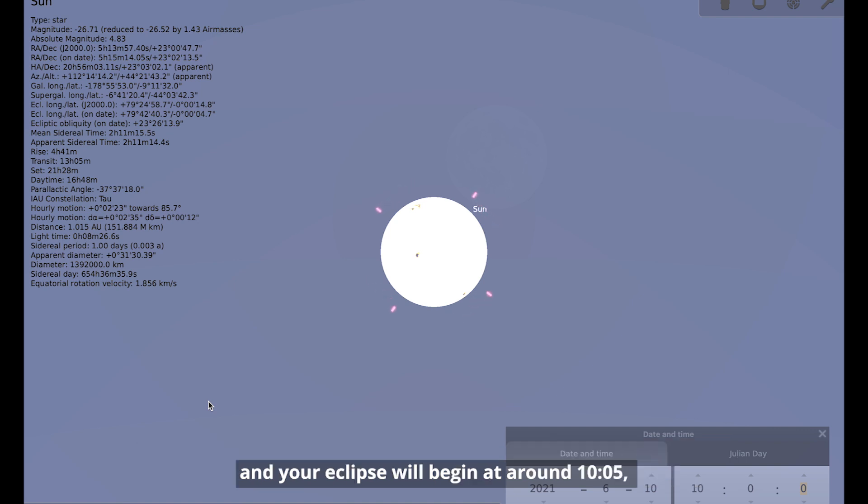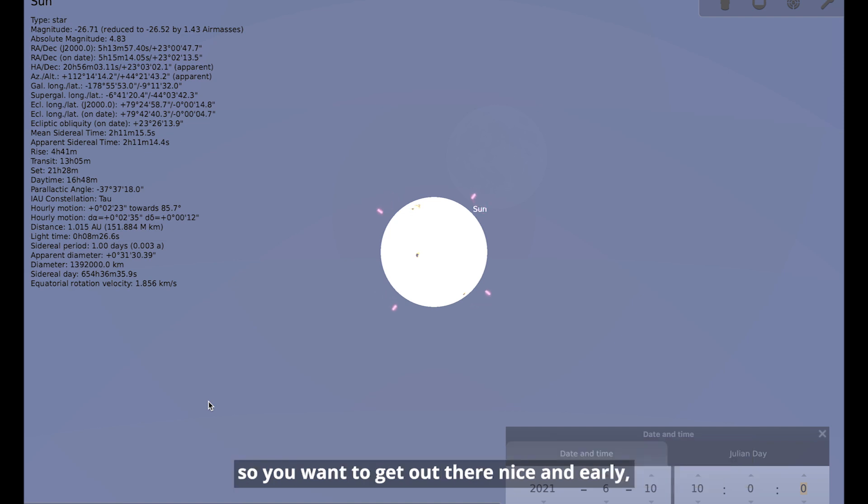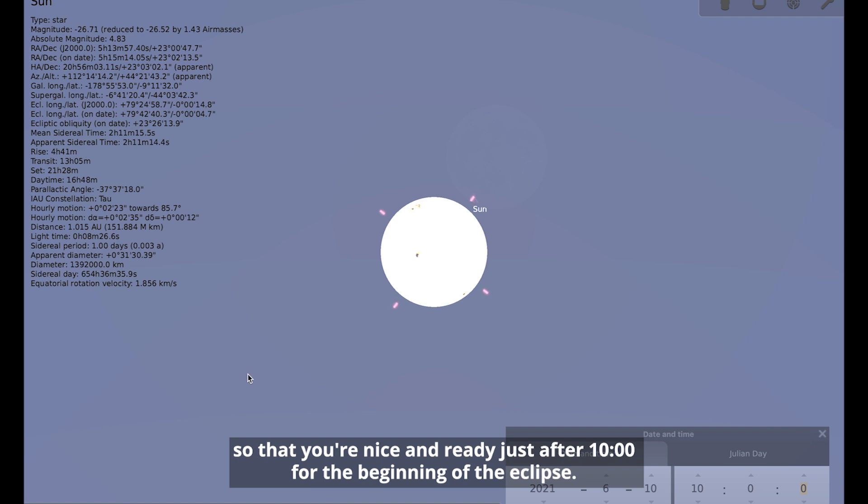Your eclipse will begin at around 5 past 10. And again, that depends exactly where you are in the country when you're going to get first contact. So you want to get out there nice and early, a bit before 10 o'clock. If you're using equipment, get that all set up, make sure it's all working properly so that you're nice and ready just after 10 o'clock for the beginning of the eclipse.